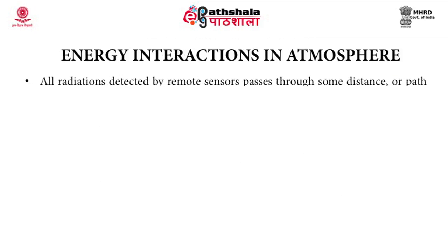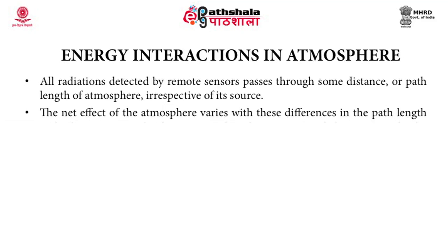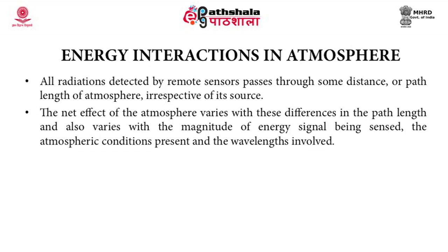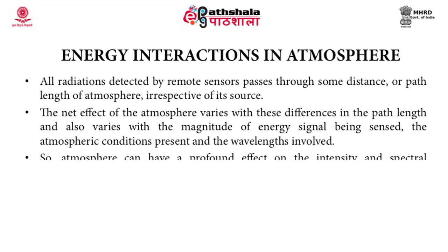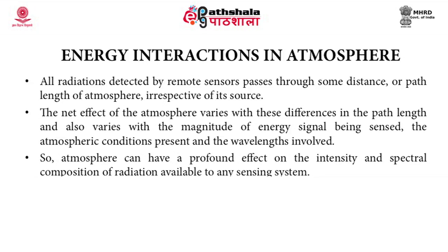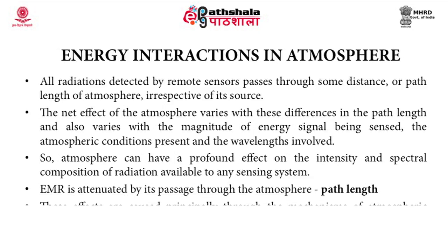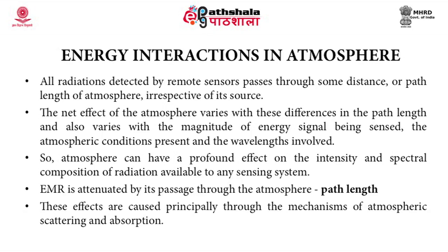The second step is energy interactions in the atmosphere. All radiations detected by remote sensors pass through some distance or path length of the atmosphere, irrespective of their source. The net effect of the atmosphere varies with differences in the path length, the magnitude of the energy signal being sensed, the atmospheric conditions present, and the wavelengths involved. The atmosphere can have a profound effect on the intensity and spectral composition of radiation available to any sensing system. These electromagnetic radiations, while passing through the atmosphere, are attenuated — principally through the mechanisms of atmospheric scattering and absorption.